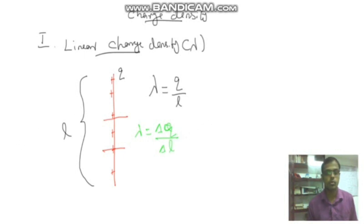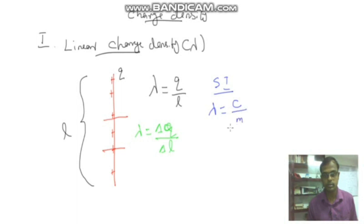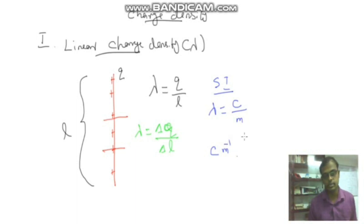The SI unit of linear charge density lambda is Coulomb per meter, since charge is in Coulombs and length is in meters. This is linear charge density. It is called linear charge density because charges are distributed linearly on a wire.